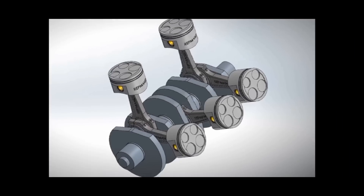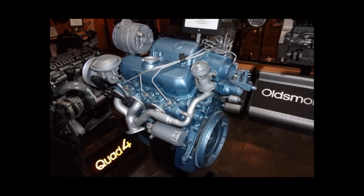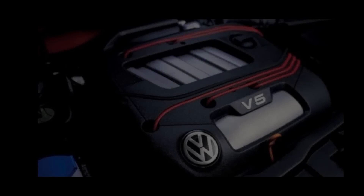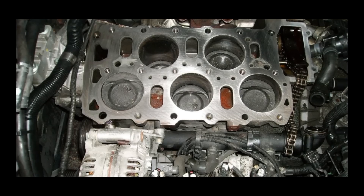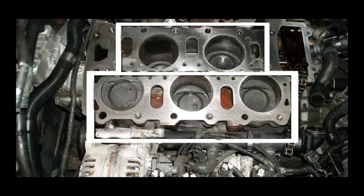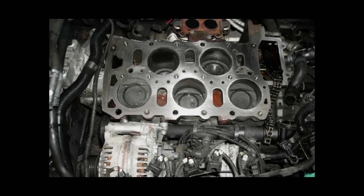The V5 engine is a five-cylinder piston engine and the design is very unusual. In the 1980s, Oldsmobile developed a prototype V5 diesel engine, but it never made it to production and the project was abandoned. The only V5 engine that was produced was the VR5 engine by Volkswagen — a narrow-angle VR5 with staggered cylinders, three cylinders on one side and two on the other, with a single cylinder head. Since one side of the engine has more mass than the other, it vibrates strangely.